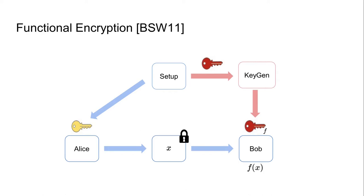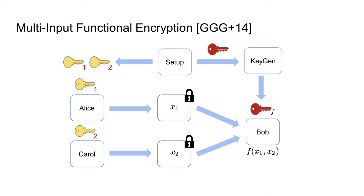This notion can also be considered in the secret key setting, where the setup algorithm only outputs a master secret key used for both encryption and functional key generation. Functional encryption provides the fine-grained access control we need, but it remains limited to single input functions. A more generalized notion allowing for multi-input functions is multi-input functional encryption, introduced by Goldwasser et al. in 2014.